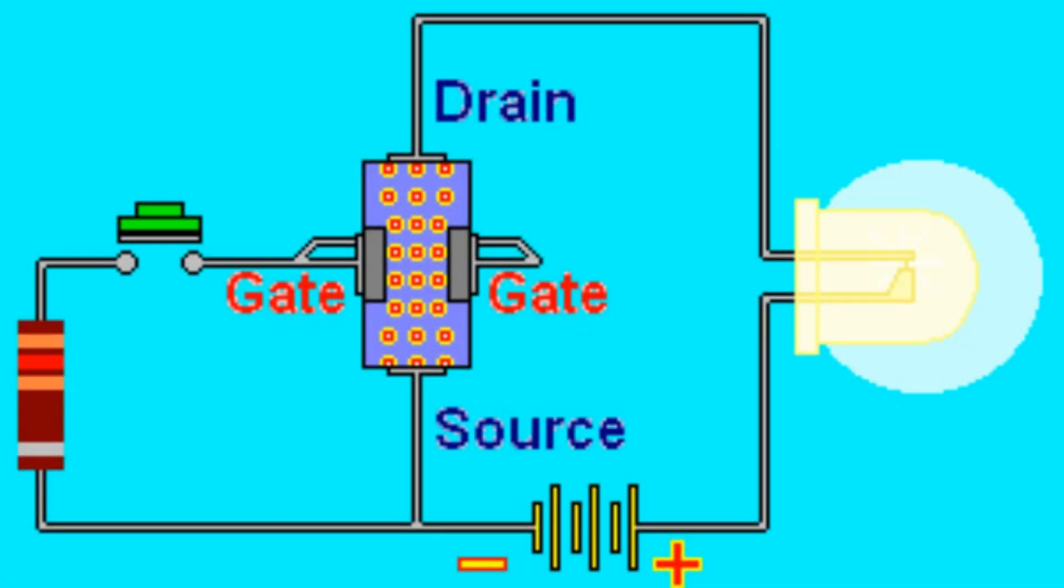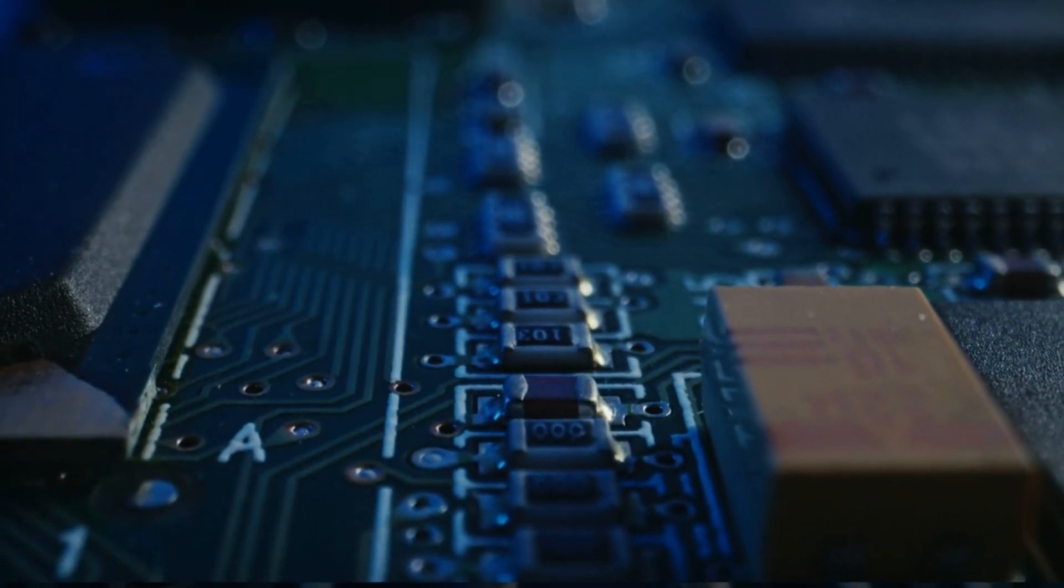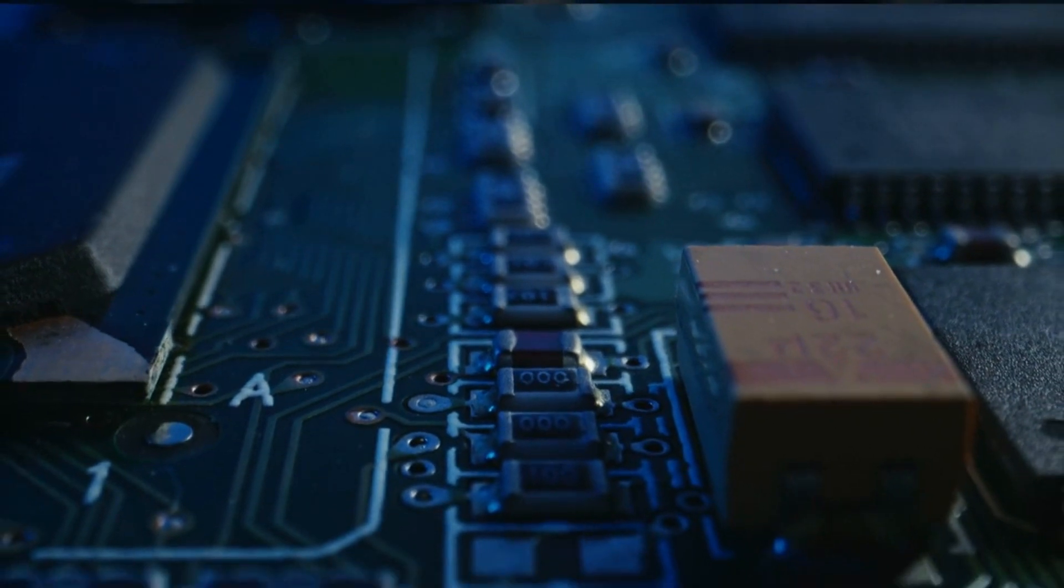When the gate is open, electricity flows through. When it's closed, the flow stops. That's the role of a transistor, a fundamental building block in the world of electronics.